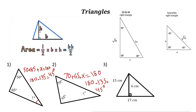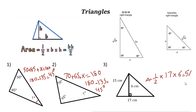To find the area of a triangle, we need the base and the height. The height is the line perpendicular to the base. The formula is: area equals one half times base times height, or base times height divided by two. For example, if the height is 6 and the base is 17, then one half times 6 is 3, and 3 times 17 is 51, so the area is 51 square centimeters.